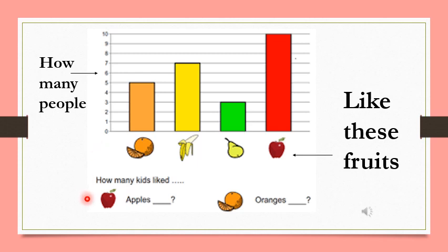They want to know how many people like apples and how many people like oranges. Let's look for the apple. Point to the apple. Now use your finger and go all the way up to the top of the bar. Now move across the line to the number. How many people like apples?